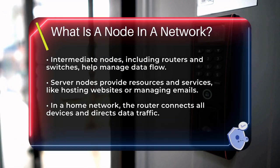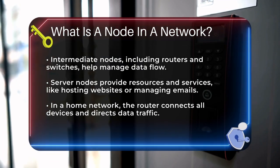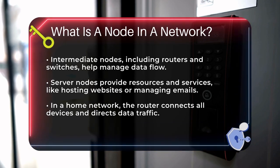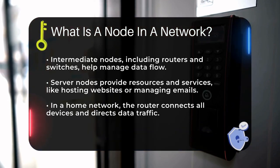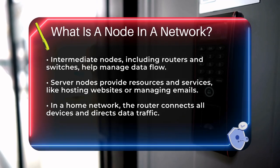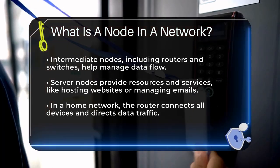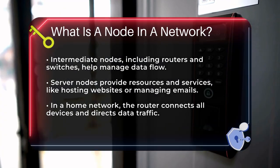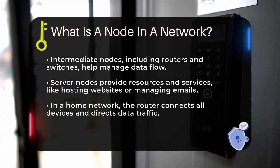In a home network, your router is a node that connects all your devices and directs data traffic. In a larger network, servers act as nodes that store and provide data to other nodes. Even smart devices like thermostats and security cameras can be nodes in an Internet of Things (IoT) network.